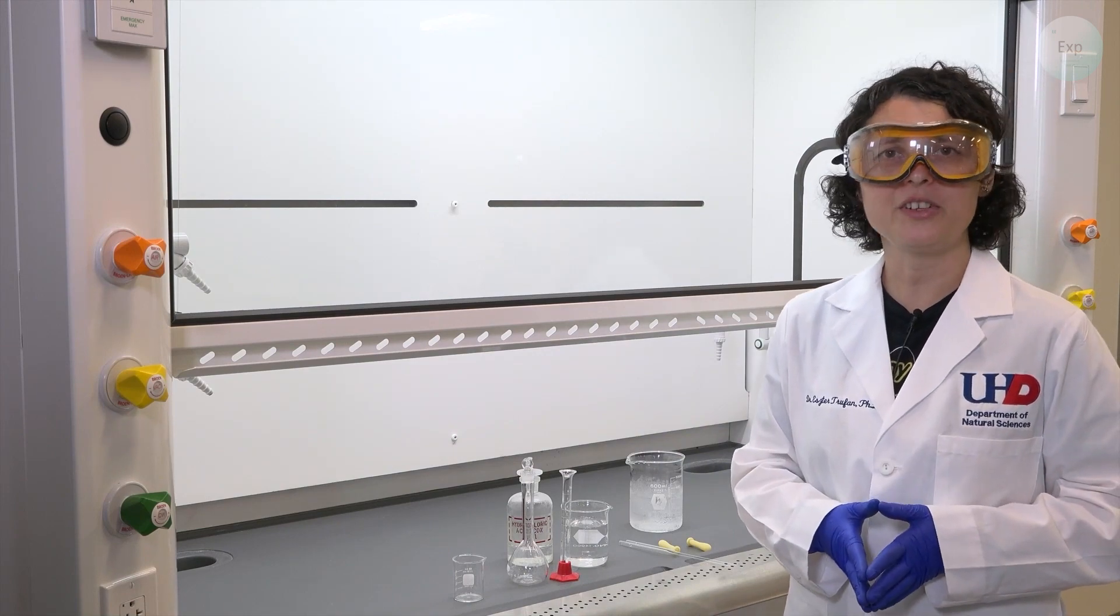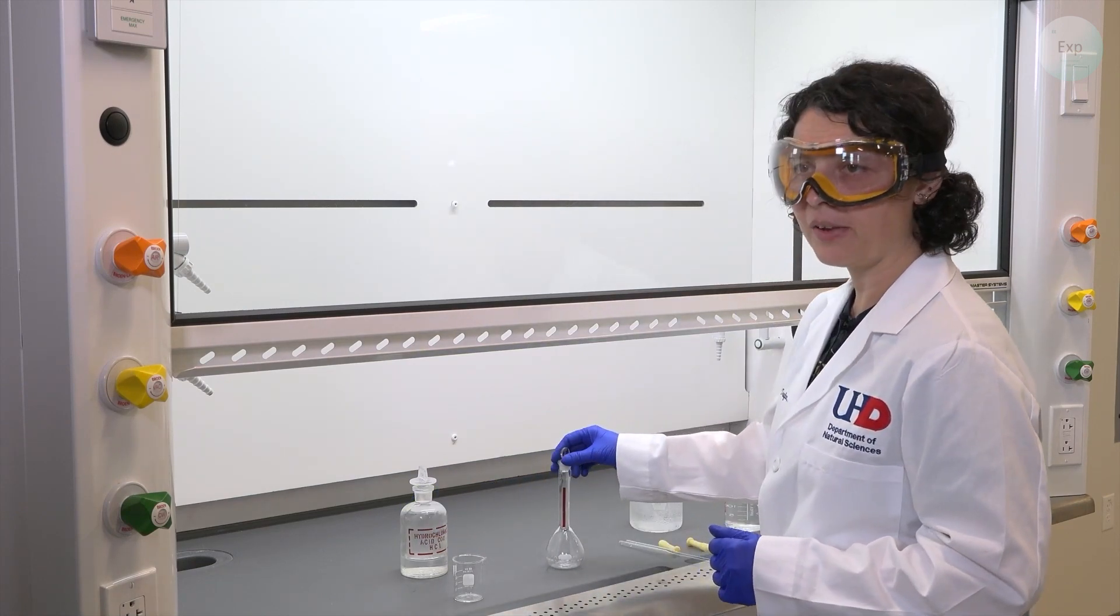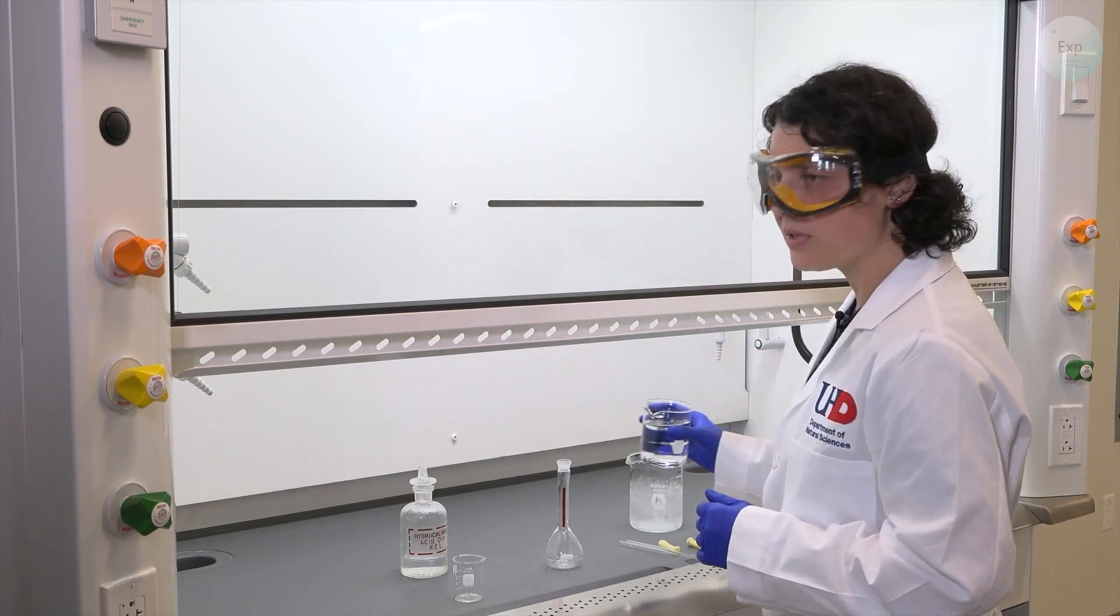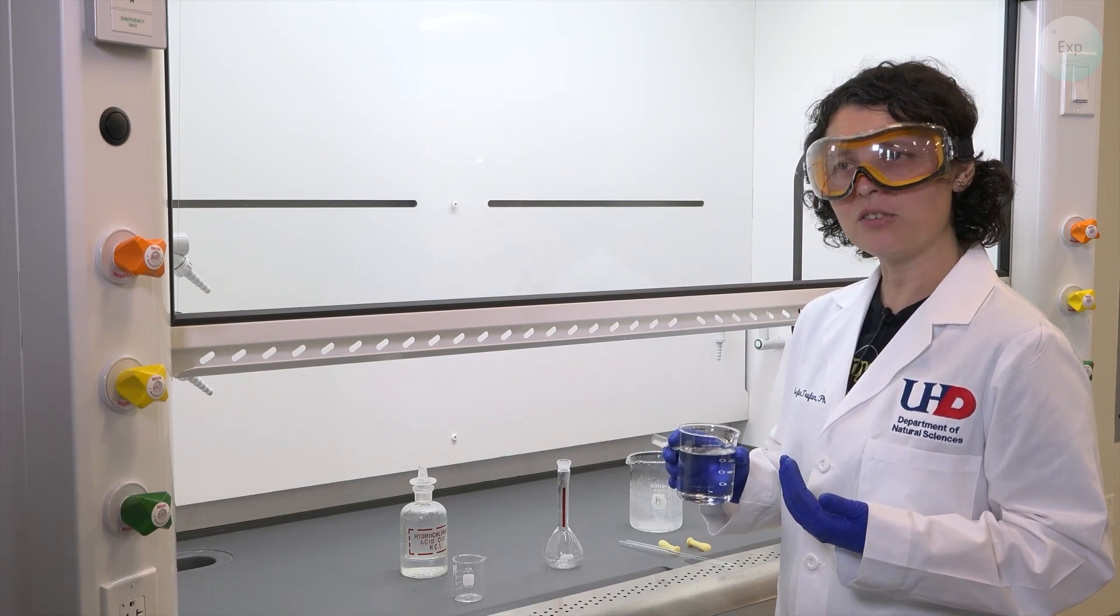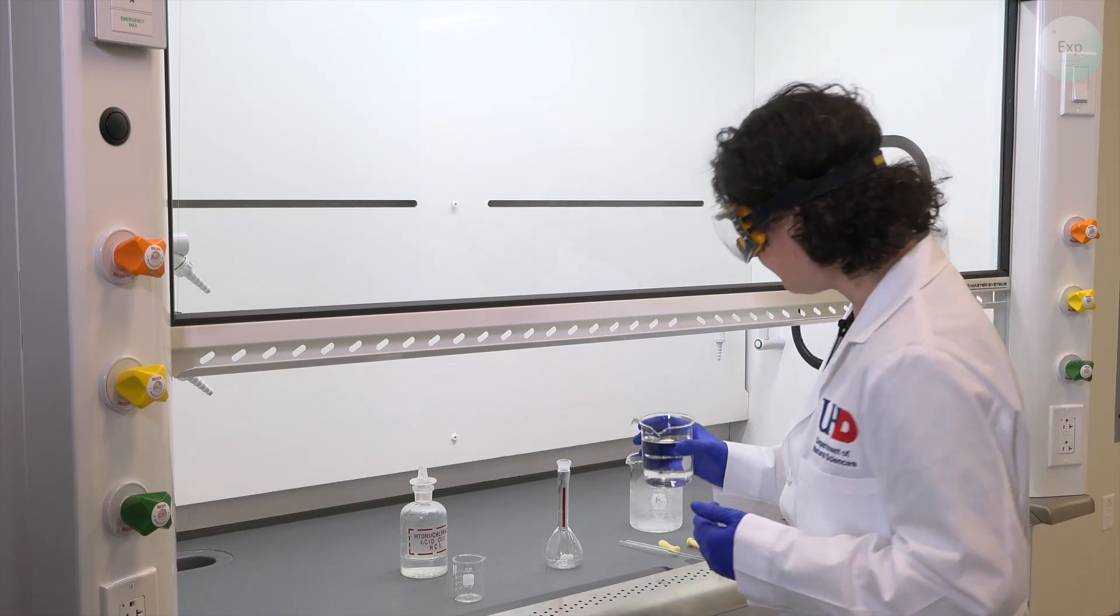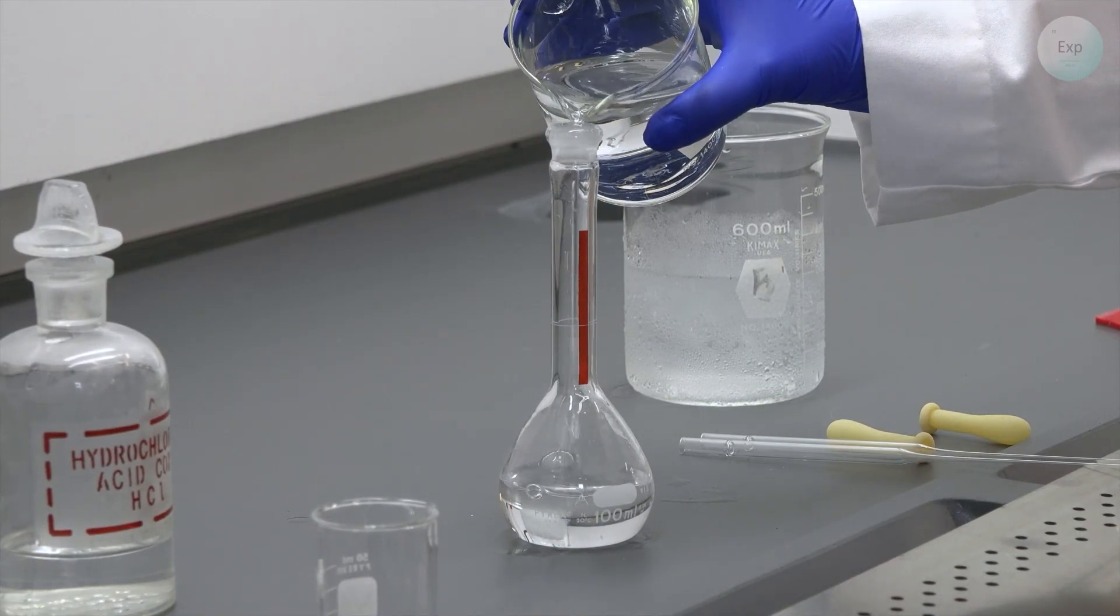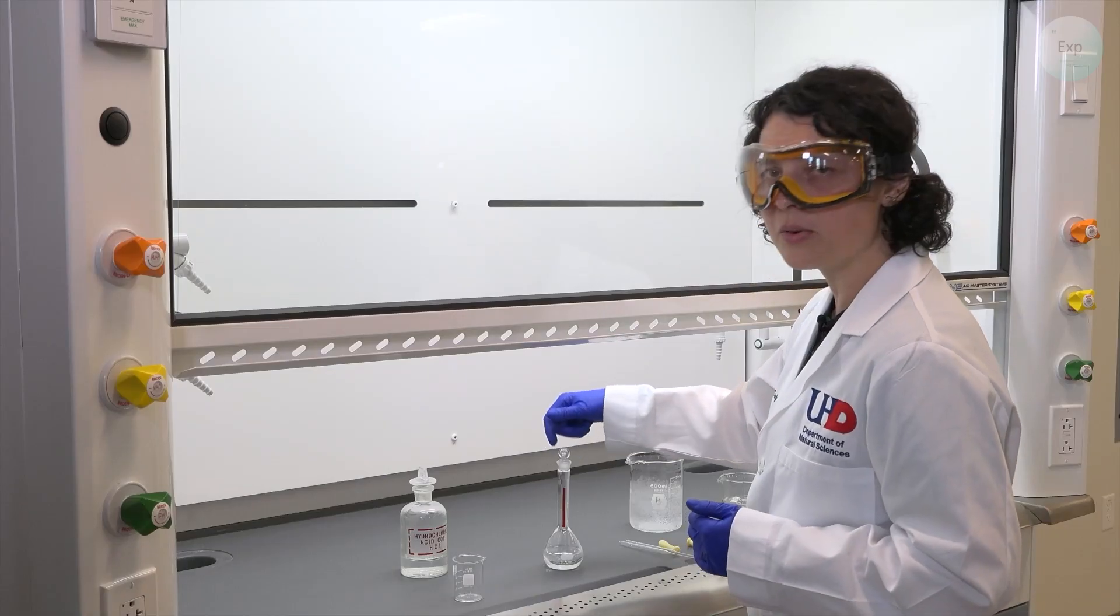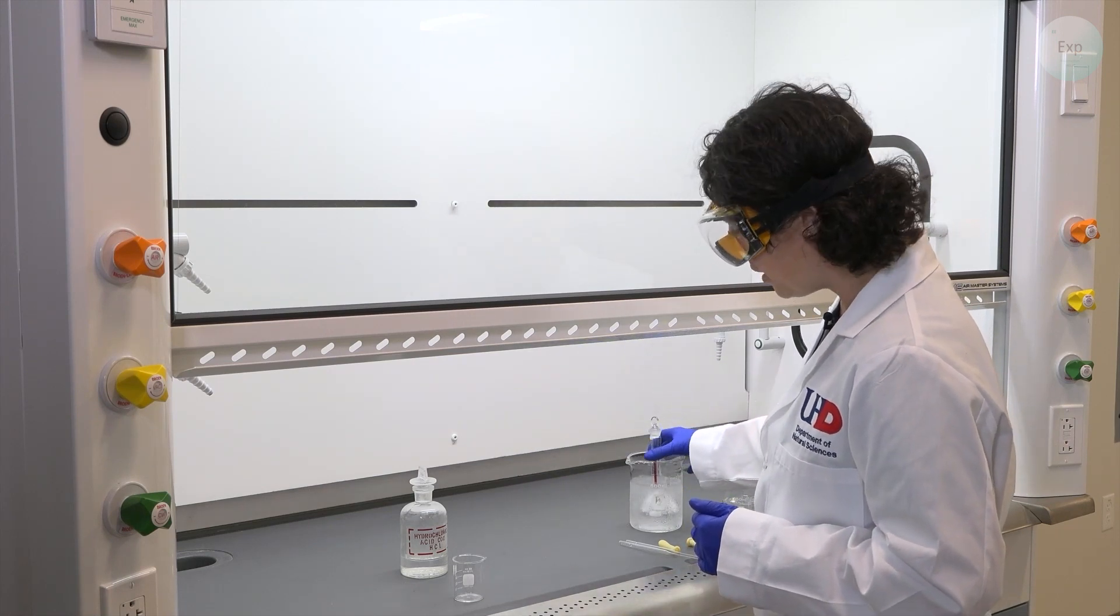Now that we have all our equipment and materials, let's get started with the process. The first thing we're going to do is fill about halfway our volumetric flask with deionized water. We can always use a 50 milliliter graduated cylinder to do a more accurate volume addition, but we can just eyeball it. We can put the cap back in so it does not get contaminated and then transfer our volumetric flask inside our ice bath.